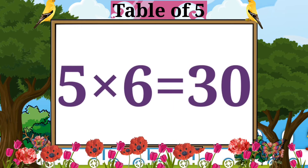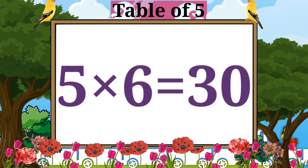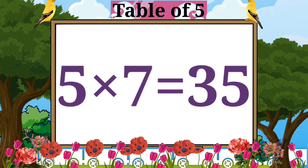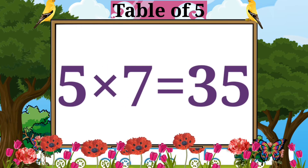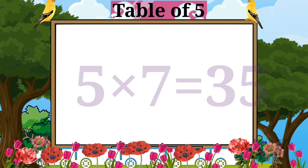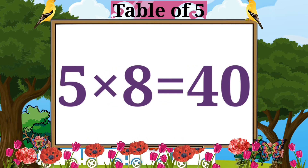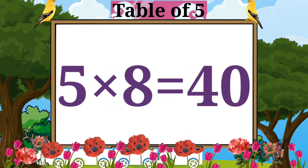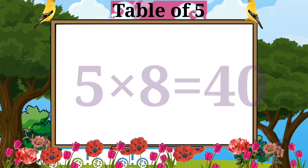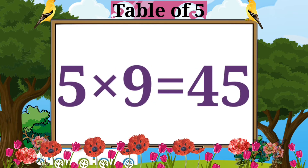Five sixes are thirty. Five sevens are thirty-five. Five eights are forty. Five nines are forty-five.